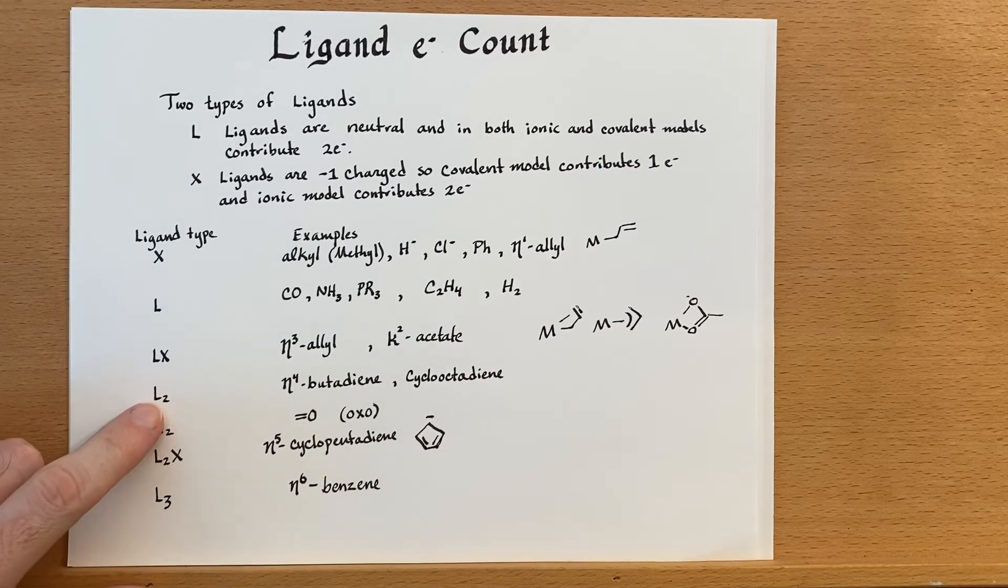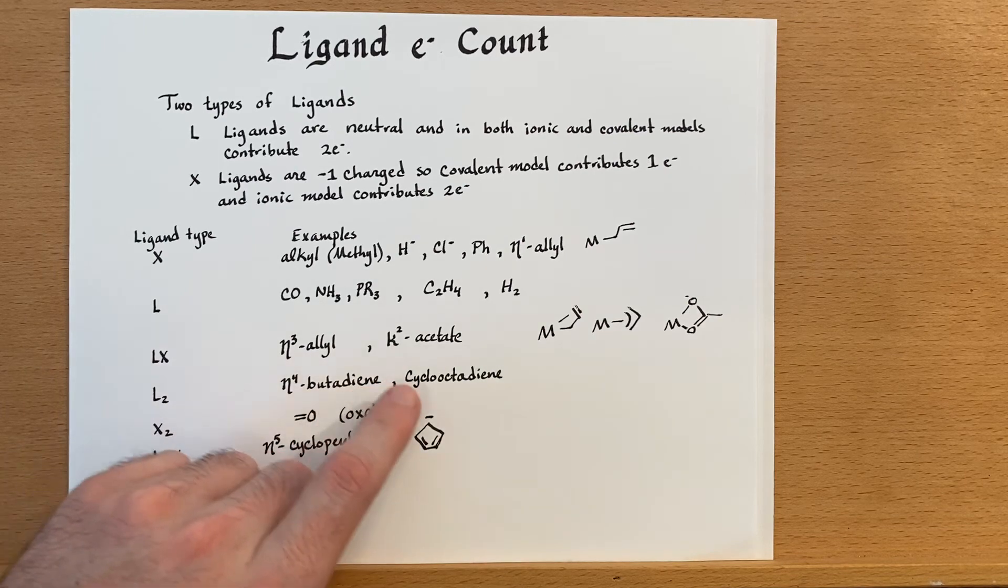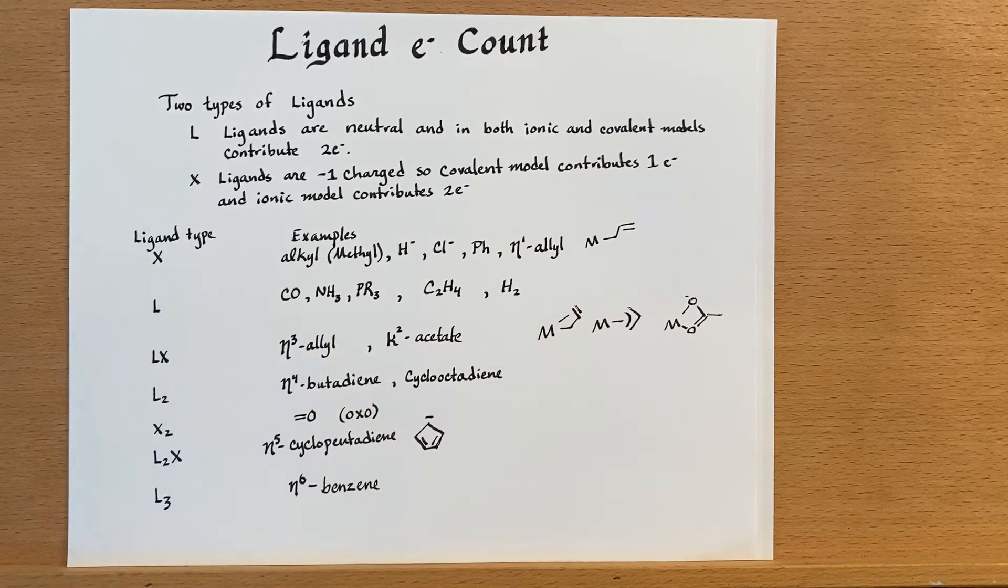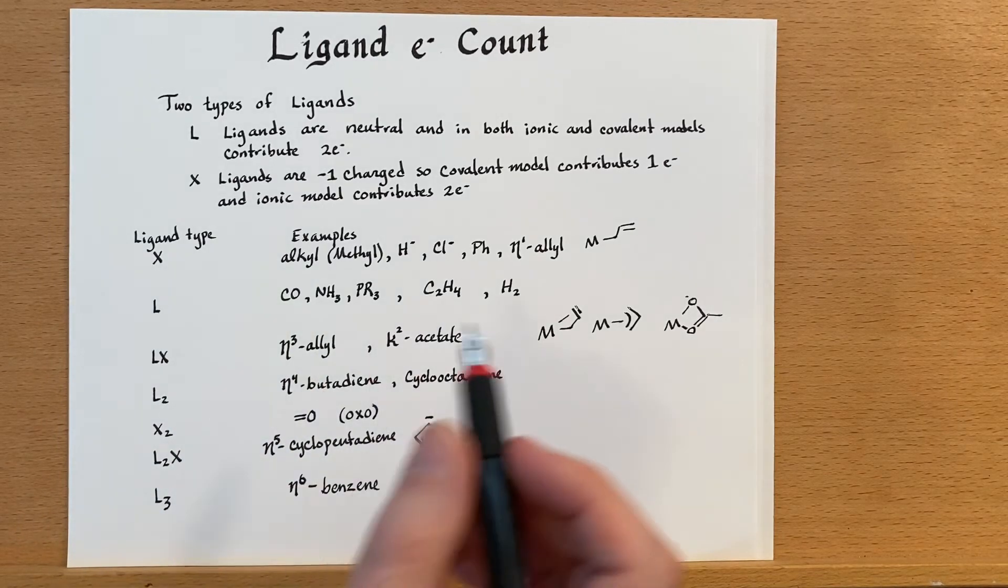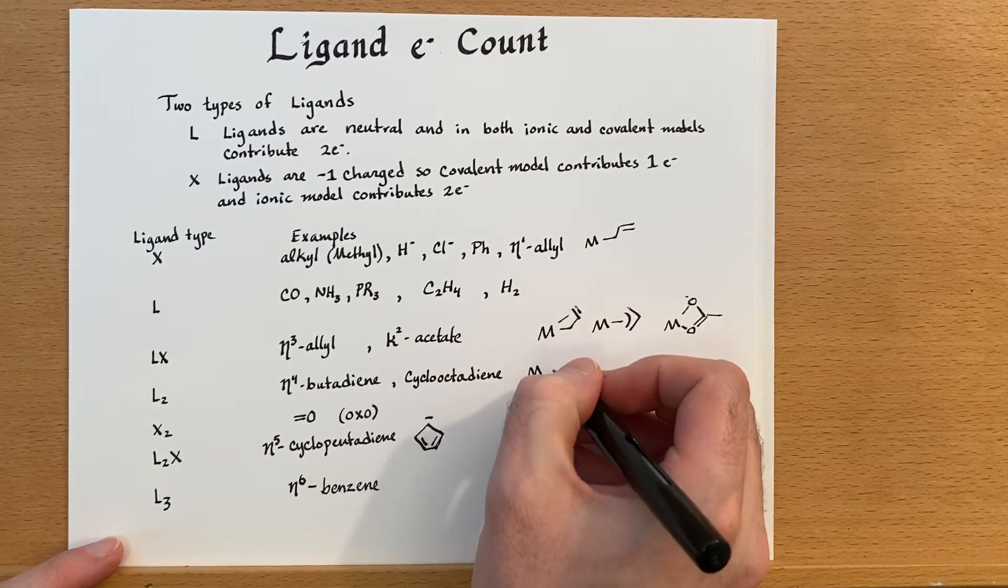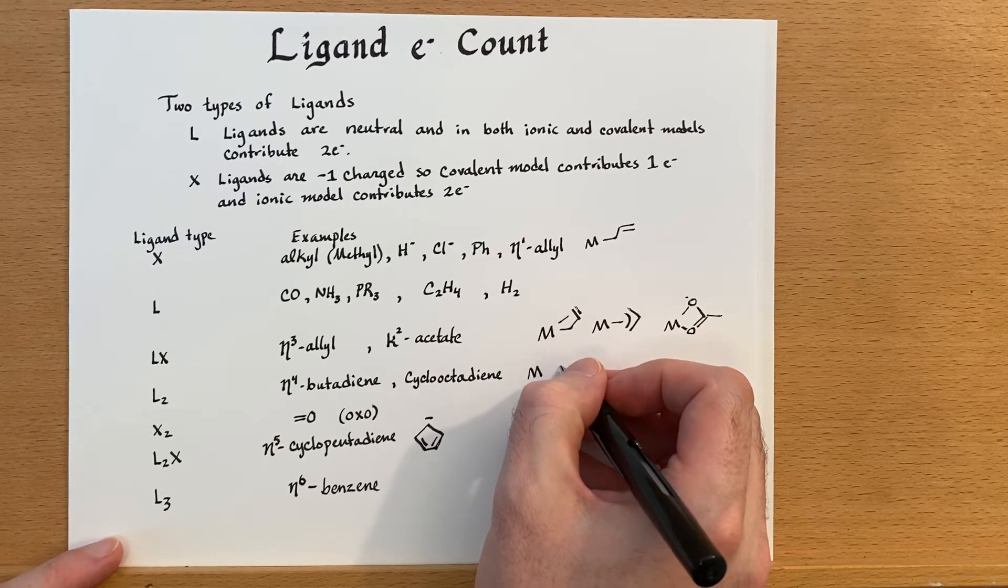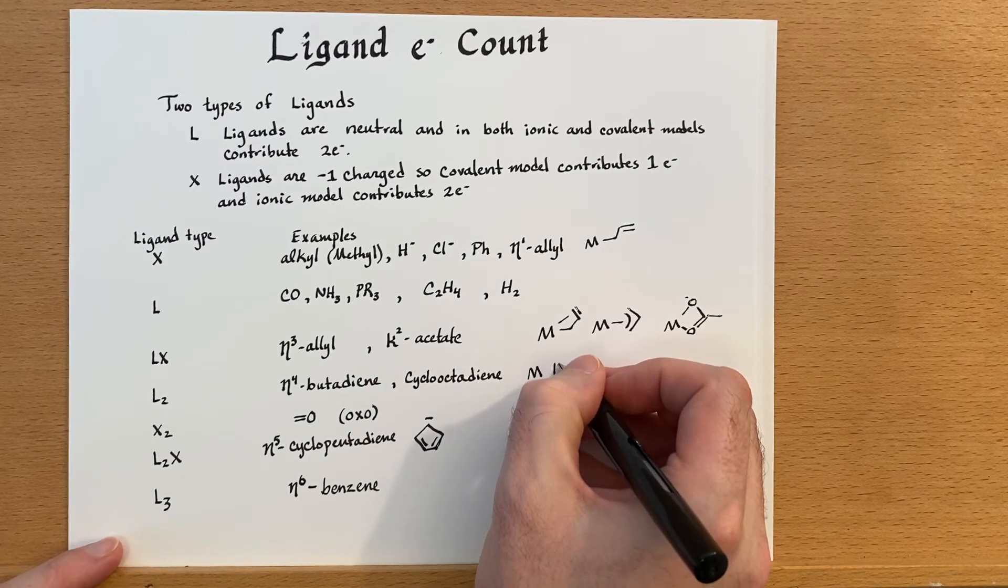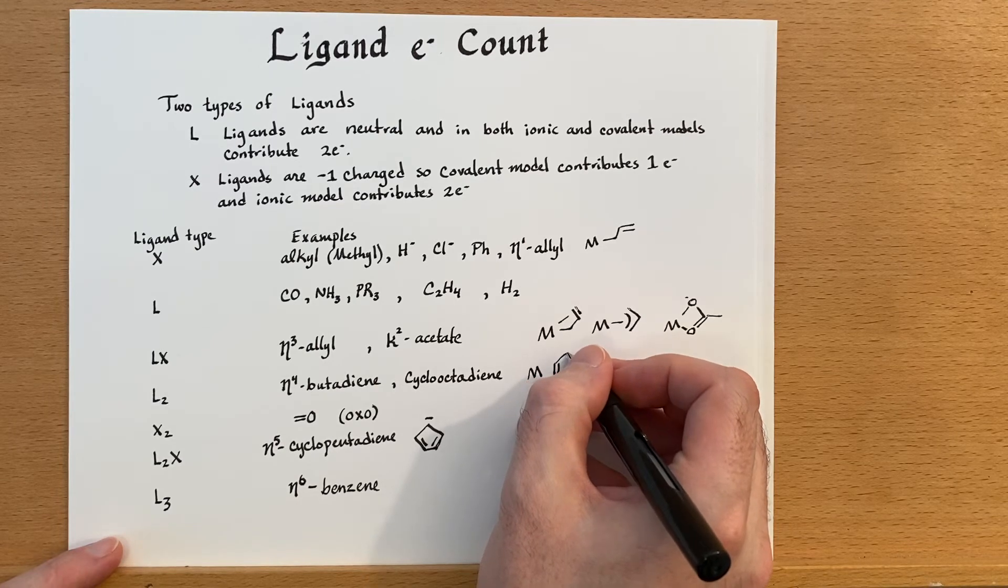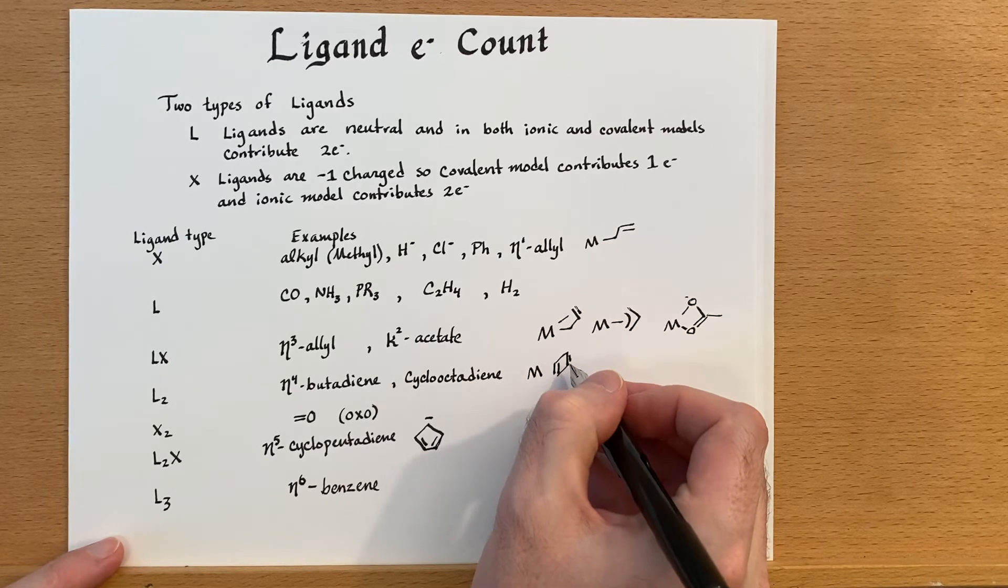There are also L2, which would be η2 butadiene or also cyclooctadiene. These are molecules that have two double bonds that can bond to the metal. And I'll try to draw that really quickly here, but sometimes it's hard to get a good picture of this. So we'll see what we can do here.